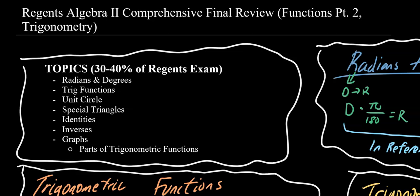Now that we've discussed most of the major functions on the exam, it's time to take a look at the final function family that's part of Algebra 2: trigonometric functions. We're going to go over radians and degrees, trig functions, the unit circle, special triangles, identities, inverses, graphs, and parts of trig functions.